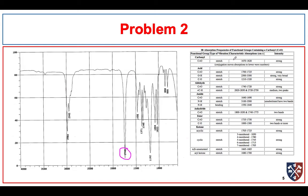If we take a look at our table for IR absorption of functional groups containing a carbonyl group, at 1740 we see aldehydes and esters. But we also know that aldehydes have two CH stretches in the 2820 and 2720 regions, and we don't see those. They're usually prominent peaks for aldehydes, and we don't see them, so we're fairly confident we don't have an aldehyde — we probably have an ester.